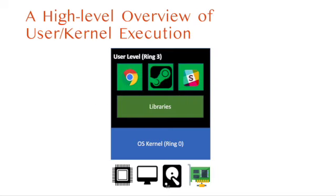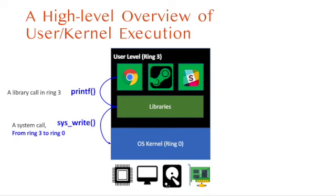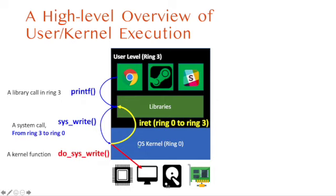How an OS switches execution from user to kernel and back is as follows: an application may call a library function in ring 3, such as printf, and that library call will call a system call like sys_write to access the console hardware. This generates a software interrupt to switch execution from user to kernel, and the kernel handles the request by calling the appropriate function. After that, the kernel runs the iret instruction to return from the interrupt context back to the application context, and the library function returns to the original application.